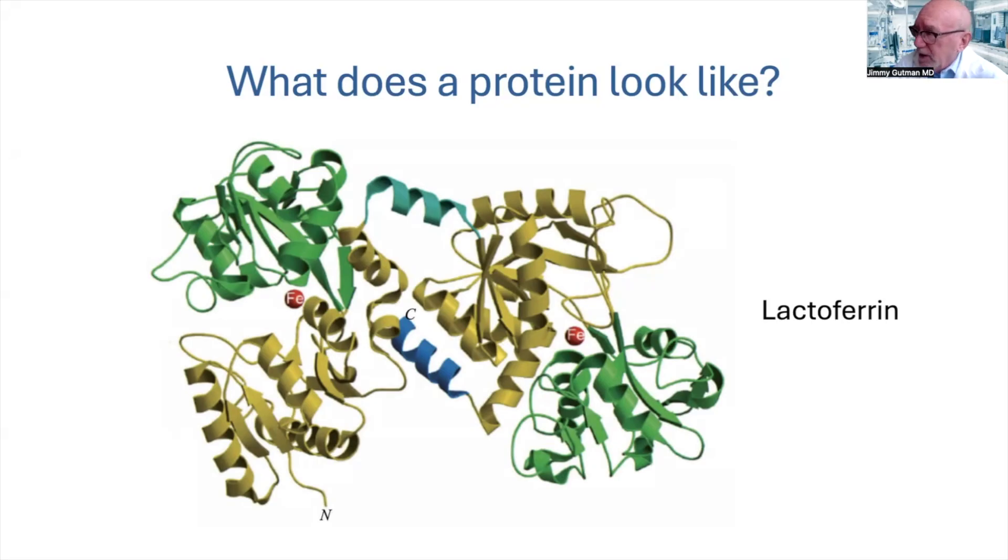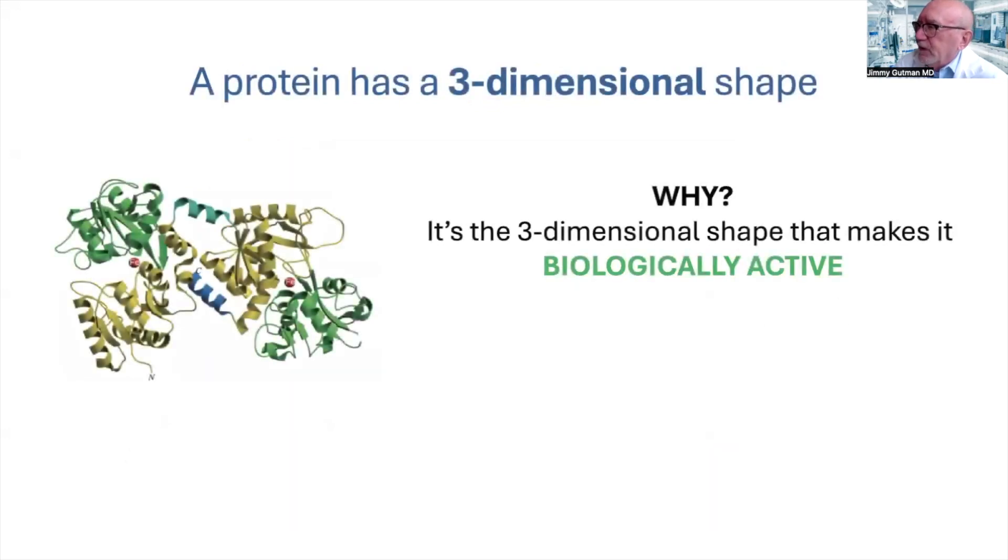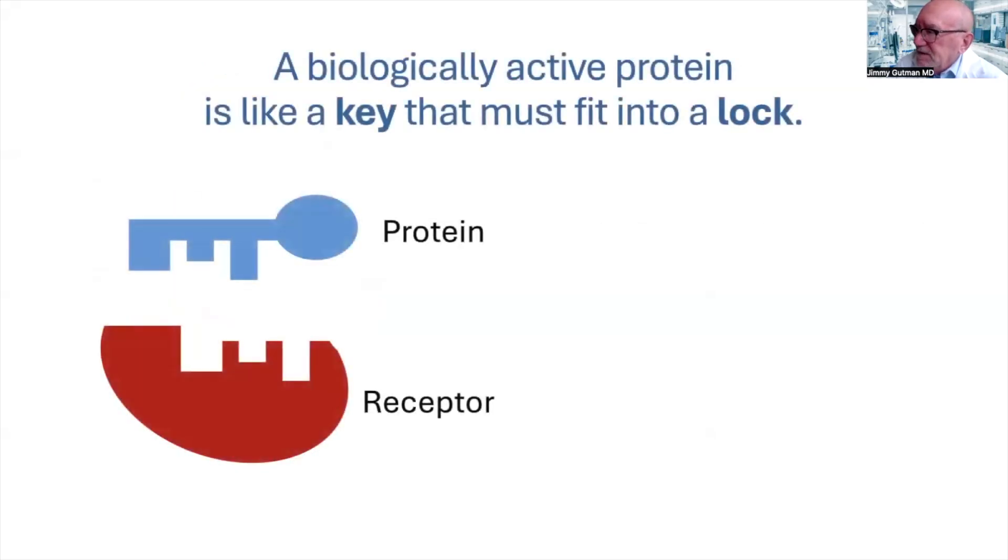And believe it or not, most proteins are actually more complex than even this. So lactoferrin has a complicated three-dimensional shape. This is important because it's the actual shape which gives it its biological activity to perform. Let me say that again. It's a protein's three-dimensional shape that allows it to work. Now why is this? Well, let's use a simple example.